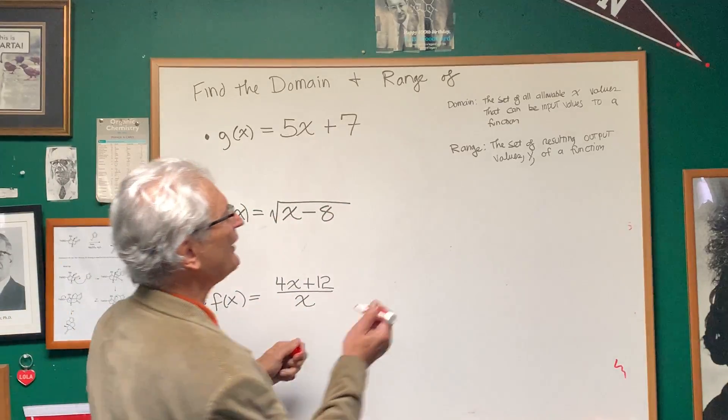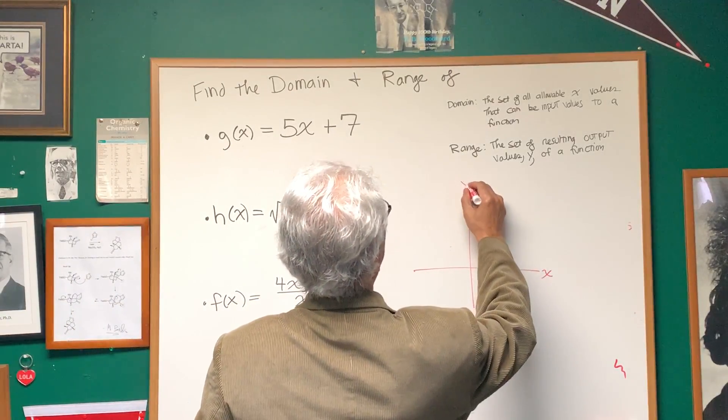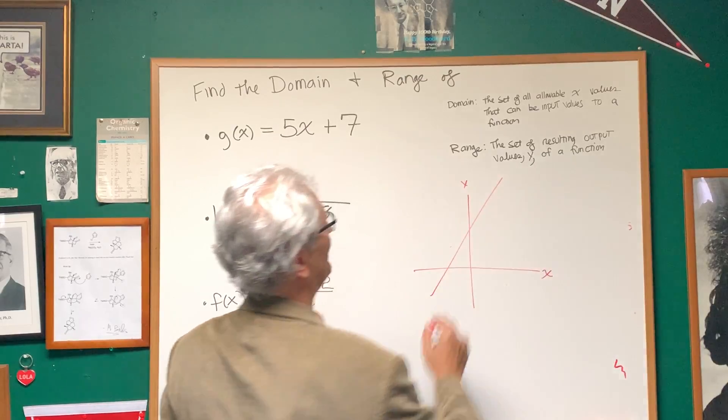So here we have 5x plus 7. Well, I think we all know what this looks like. 5x plus 7 is a straight line, right? It's a straight line.